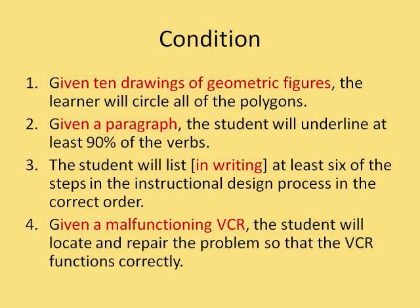The description of the conditions of demonstration is the second most critical part of the learning objectives. This component describes the tools or information that the learners will be given when they demonstrate their learning. In the first example, the condition is given ten drawings of geometric figures. The condition of the second example is given a paragraph. The condition of the third example was not explicitly stated. Usually when students list, they list in writing, but today it could be listing orally or in other methods. Therefore, it is best to explicitly state the condition and not imply the condition. The condition of the last example is given a malfunctioning VCR.